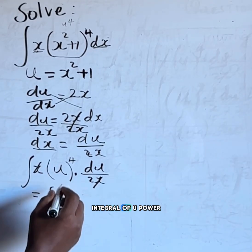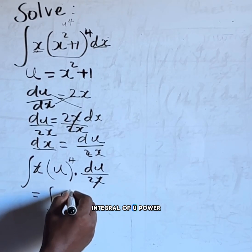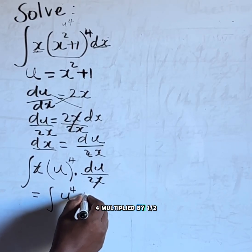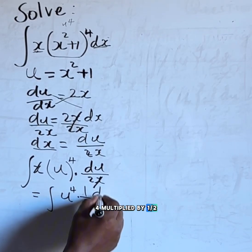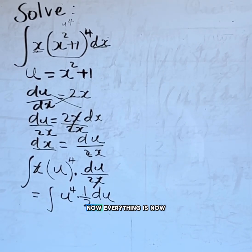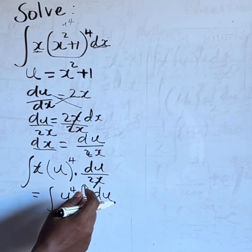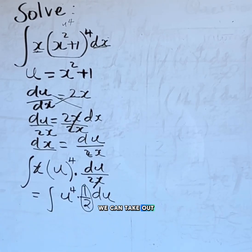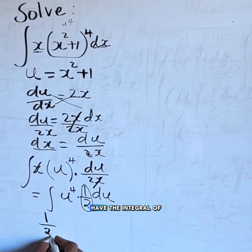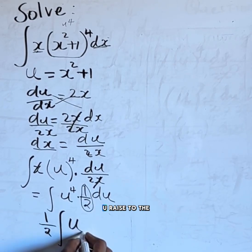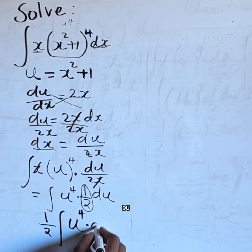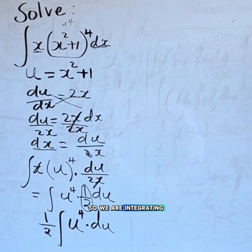So we shall have integral of u to the power of 4 multiplied by a half du. Now everything is in u, there is no more x. Now because this one half is a constant we can take it out of the integral, giving us one half times the integral of u raised to the power of 4 du. So we are integrating u with respect to du.